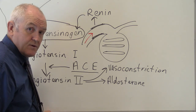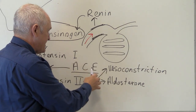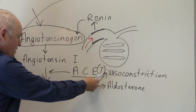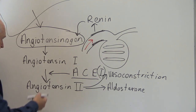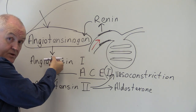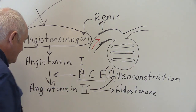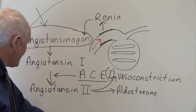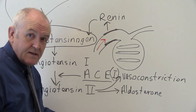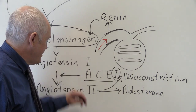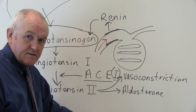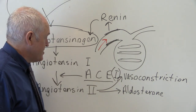Angiotensin converting enzyme inhibitors work by inhibiting the ACE enzyme, therefore preventing the conversion of relatively inactive angiotensin type 1 into highly physiologically active angiotensin type 2. This prevents vasoconstriction and prevents the release of aldosterone, keeping blood pressure down. That is why ACE inhibitors are hypotensive agents used in the treatment of hypertension.